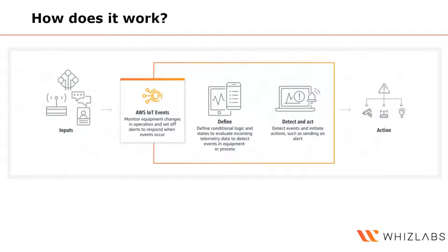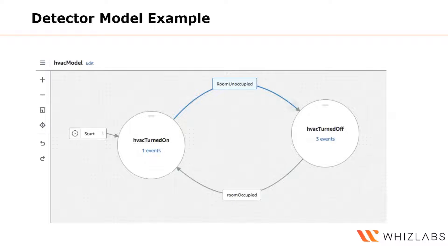Here is a detector model example. A very simple logic is applied: if the room is unoccupied, the HVAC is turned off for that room. When someone enters the room, the detection confirms the room is no longer empty, and the HVAC is turned on. When the room is empty again, the HVAC is turned off. You can write this for one HVAC and then copy it to all other HVACs installed in different buildings around the world.